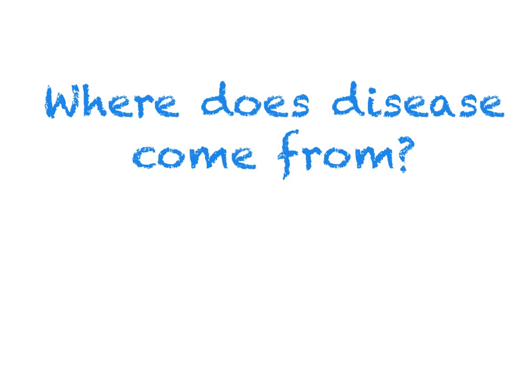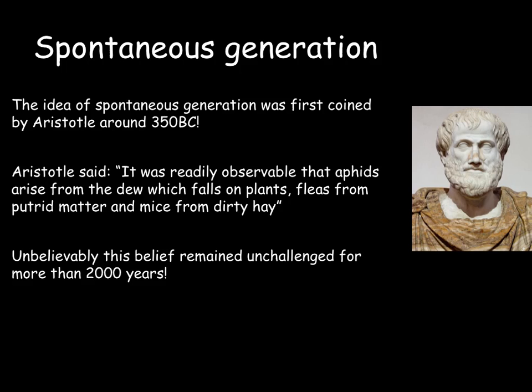So where does disease come from? How does disease appear? Well, until the 19th century, people used to think that diseases spontaneously appeared from nowhere. This was due to the theory of spontaneous generation, which was originally coined by Aristotle around 350 BC. He said that it was readily observable that aphids arose from the dew which falls on plants, fleas from putrid matter, and mice from dirty hay.